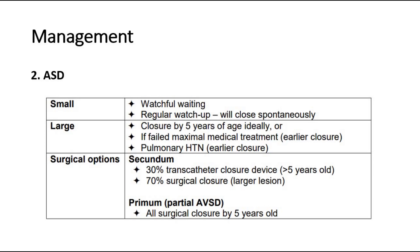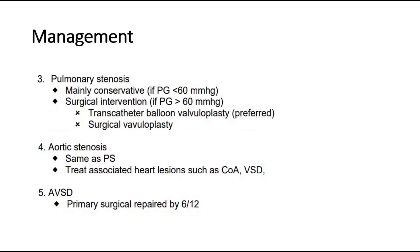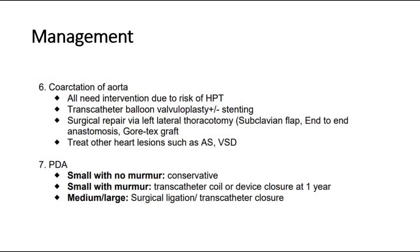For pulmonary stenosis, which is also quite common, management is mainly conservative depending on the pressure gradient between the right ventricle and pulmonary artery. If the pressure gradient is less than 60 mmHg, we can do conservative management; if more than 60, it will require transcatheter balloon valvuloplasty or surgical valvuloplasty. Aortic stenosis is managed similarly. For AVSD, primary surgical repair by 6 months old. Coarctation of the aorta can be managed with transcatheter balloon valvuloplasty plus or minus stenting, or surgical repair, along with treating other associated heart lesions.